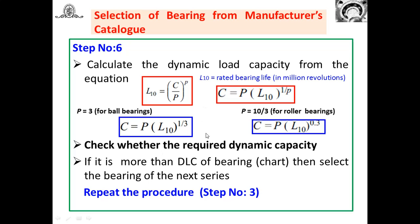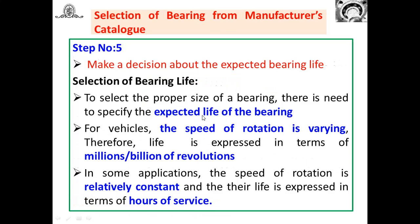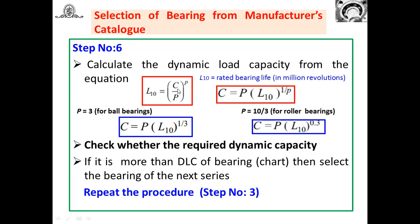The last step is to calculate the dynamic load capacity C from the load-life equation: L10 = (C/P)^p, where C is the dynamic load capacity, P is the equivalent dynamic load, and p equals 3 for ball bearings and 10/3 for roller bearings. Rearranging: C = P · L10^(1/p). Substitute the appropriate values — if selecting a ball bearing, use p = 3; for roller bearing, use p = 10/3 — to get the required dynamic load capacity C.